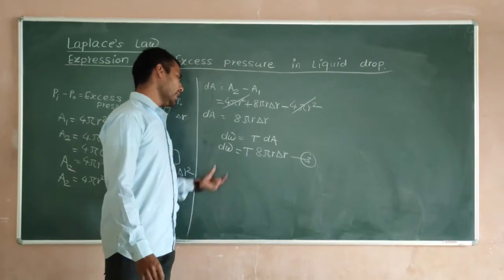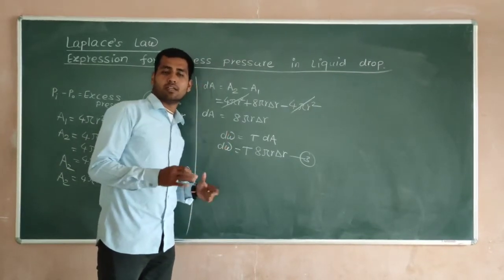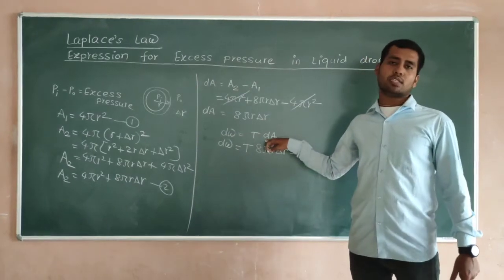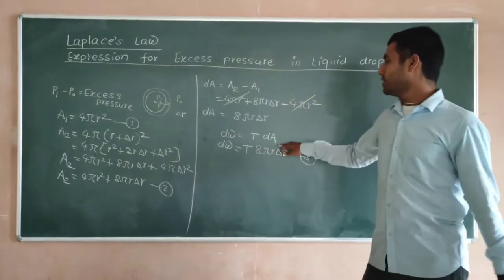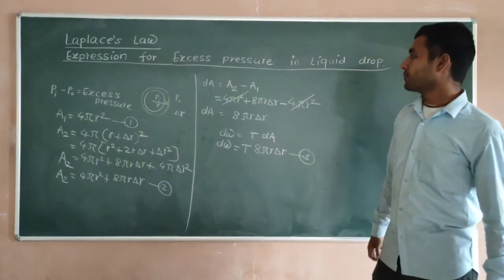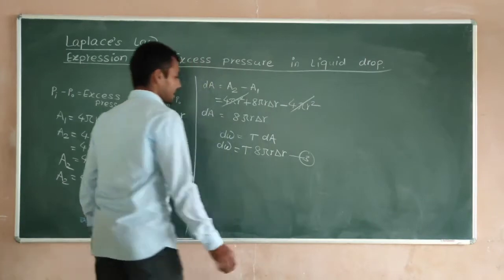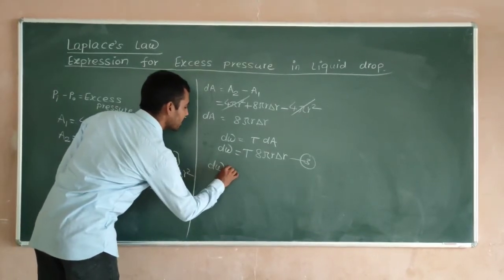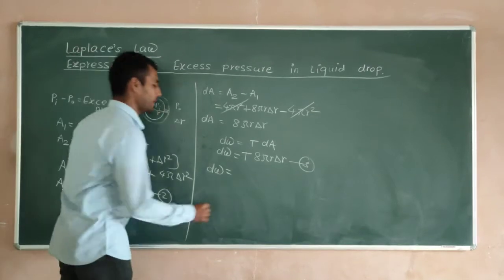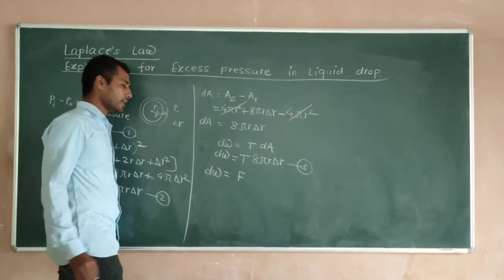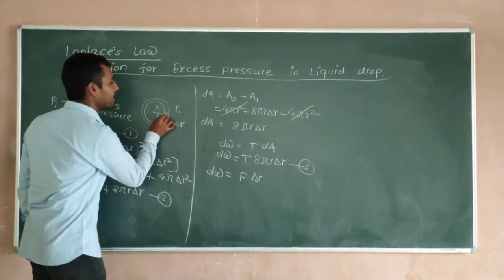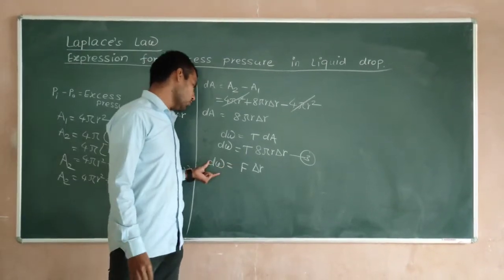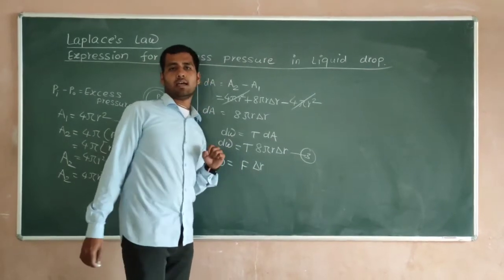Here we have found the work done equation. This work done is stored in the form of potential energy, which is known as surface energy. We also know the general concept that work done equals force times displacement — that is, dW = F × δR, where δR is the displacement.